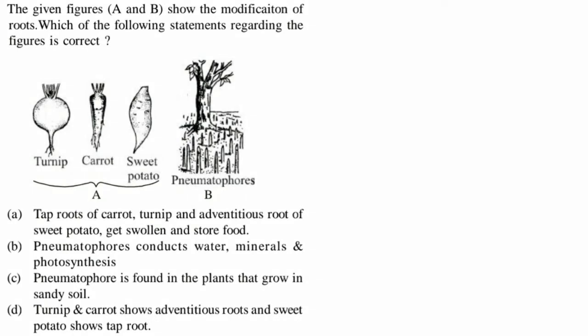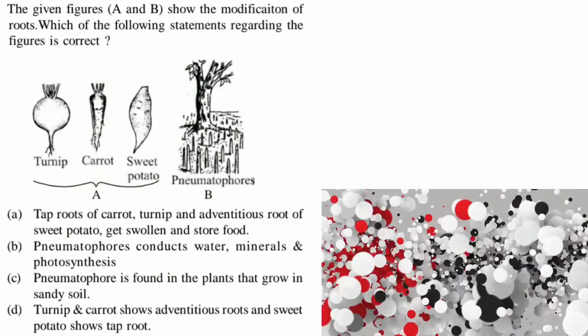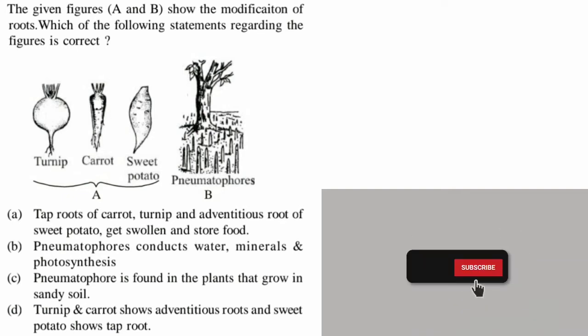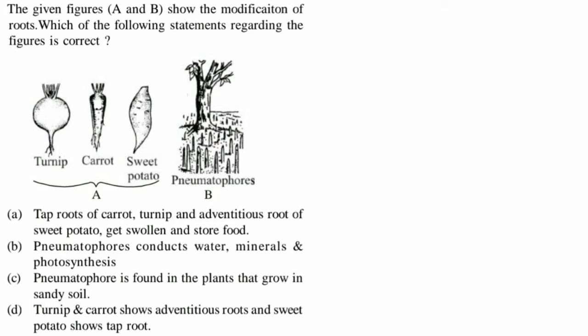The second question: the given figures A and B show the modification of roots. Figure A contains three diagrams — turnip and carrot are tap roots that store food, and sweet potato is an adventitious root that also stores food. Figure B shows pneumatophores, which are for respiration — they absorb oxygen, normally seen in mangrove plants. Option A states tap roots of carrot and turnip and adventitious root of sweet potato get swollen and store food — that is correct.